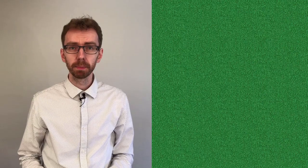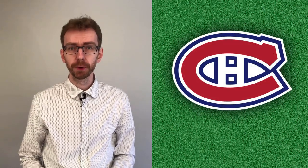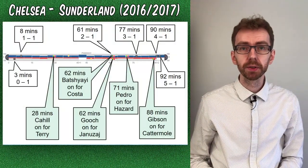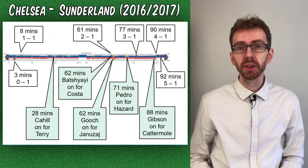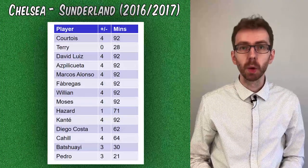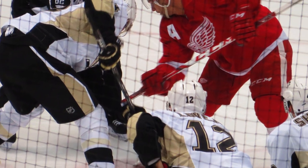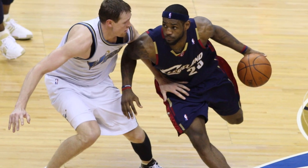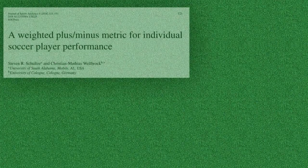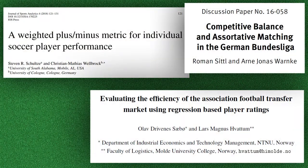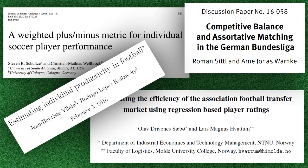Plus-minus ratings are examples of using the top-down paradigm. The basic plus-minus statistic was first calculated in the 1950s by the Montreal Canadiens. It measures a player's goal differential, that is, the difference between the goals scored and the goals conceded when a player is in the game. The NHL officially started compiling plus-minus ratings in 1967. Around 2003, plus-minus ratings were introduced also in basketball and NBA. In recent years, several versions of plus-minus ratings have been presented for football, but only in unofficial channels.